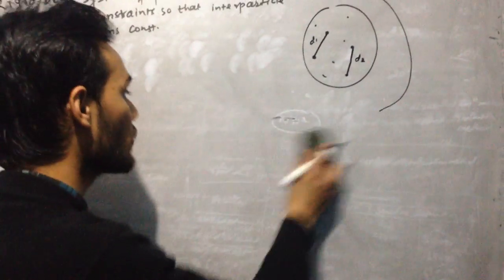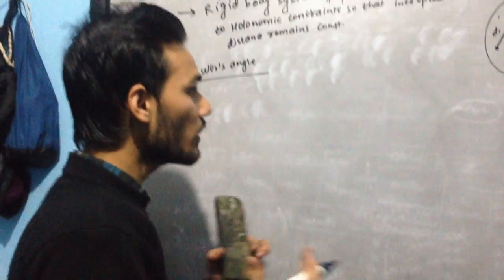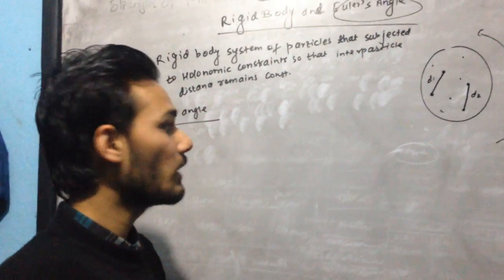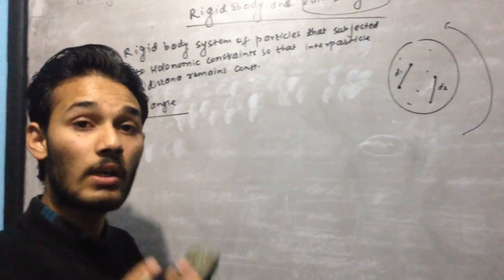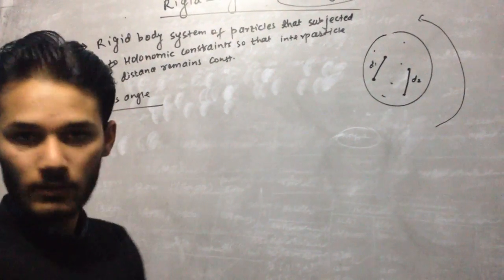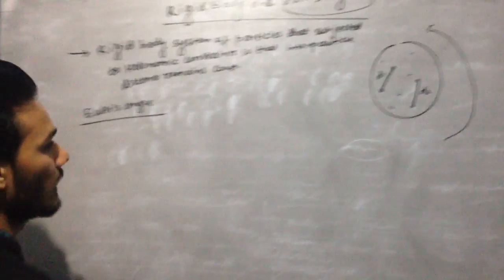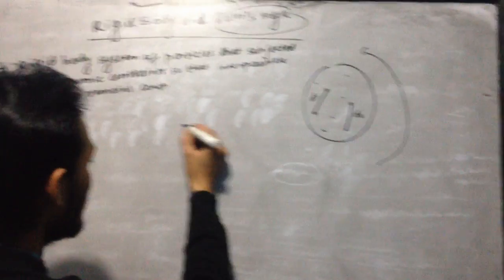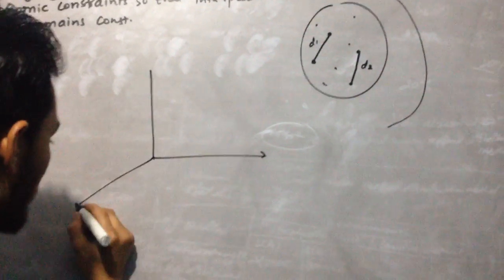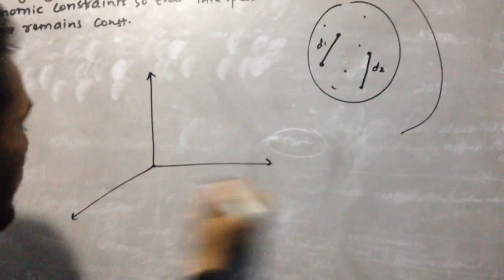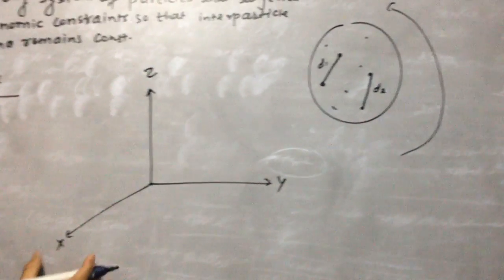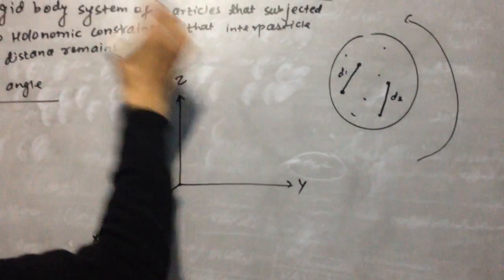In total, six coordinates are required to specify the complete configuration of the body. Now, what are Euler's angles? We have the X, Y, and Z axes.